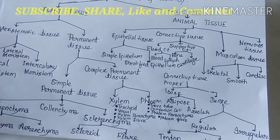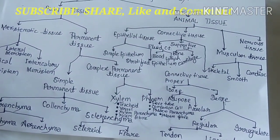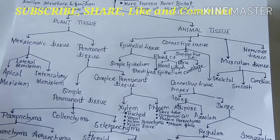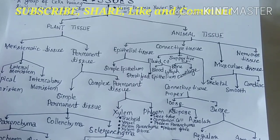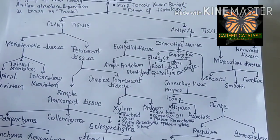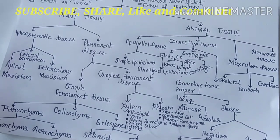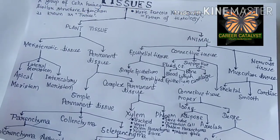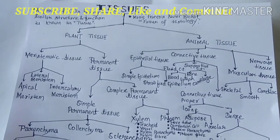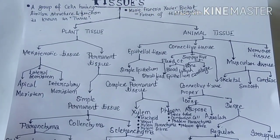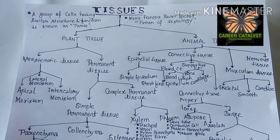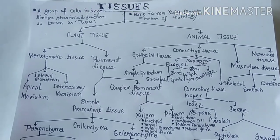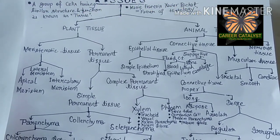If epithelial tissue is in a single layer, it is called simple epithelium; if it is multi-layered, it is called stratified epithelium. Based on the size of cells present, it can be columnar if pillar-like cells are present, cuboidal if cubical cells are present, or squamous if flat cells are present. The function of epithelial tissue is to provide protection to various animal body parts.